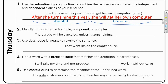Number two: identify if the sentence is simple, compound, or complex. Look at the first clause: 'The parade will be canceled.' Could that be a complete sentence on its own? Yes, it could. So I put a little U under it, and since it can stand alone, that's independent.